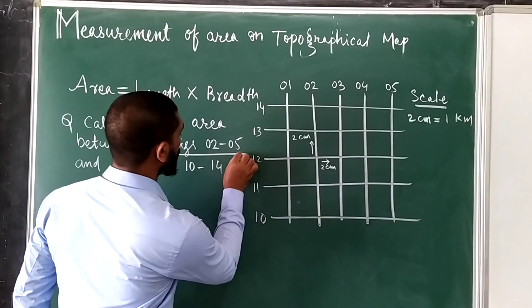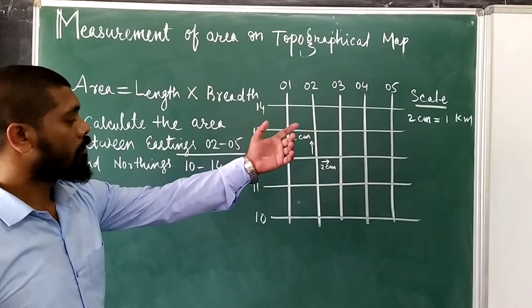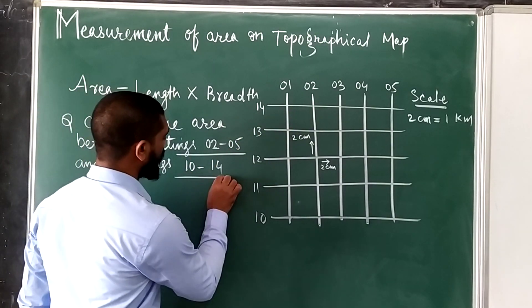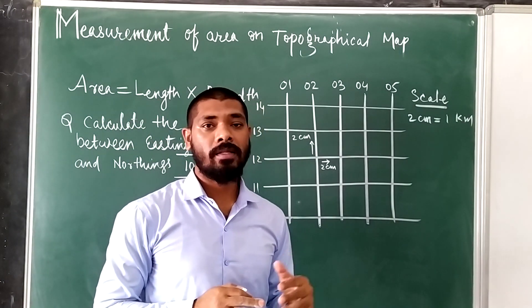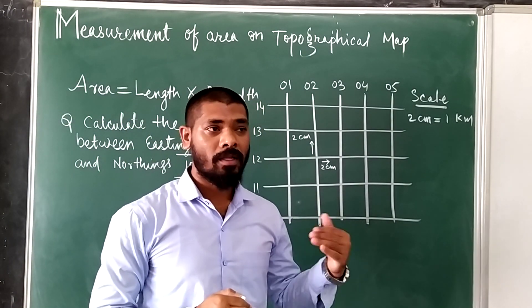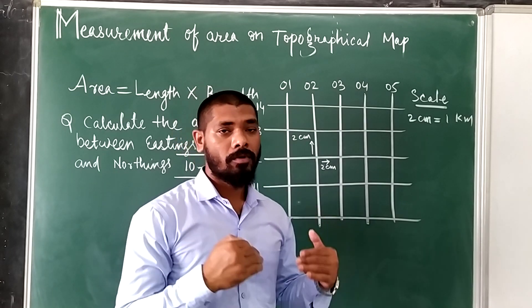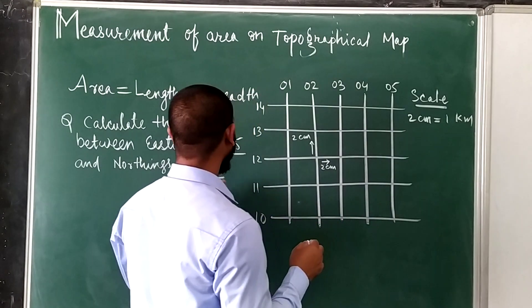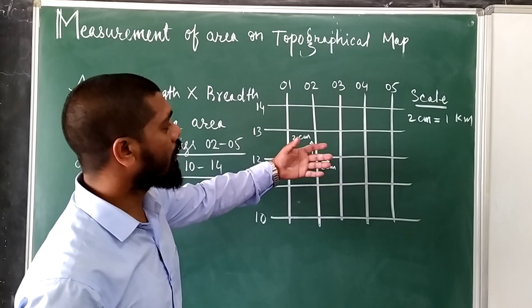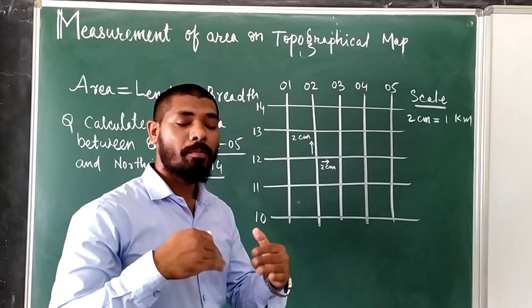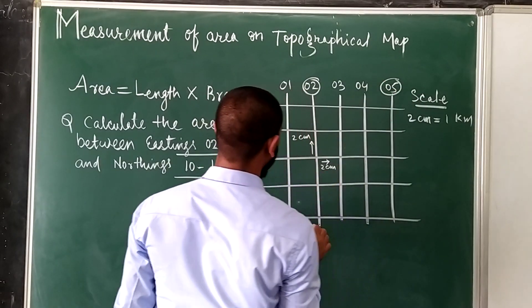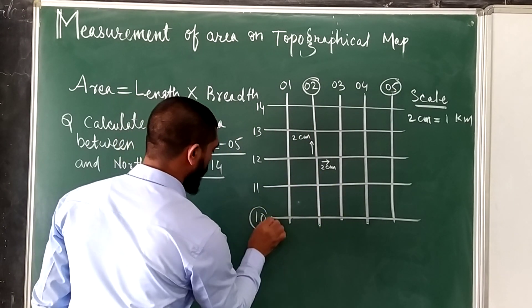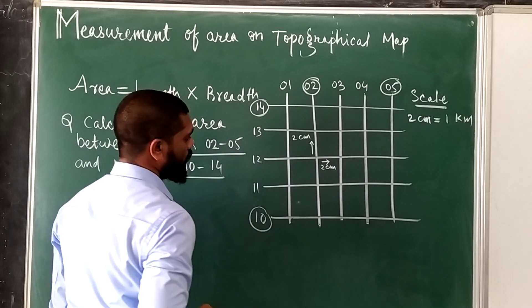Eastings 02 to 05 and Northings 10 to 14. There are different simple ways to calculate the area of the topographical map. Simply you can calculate directly without doing any mathematical calculation. 02, 05 and here Northings is 10 to 14.